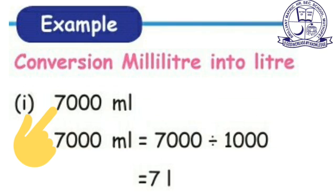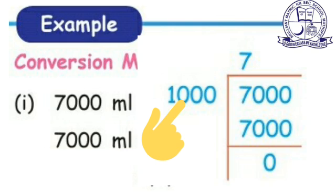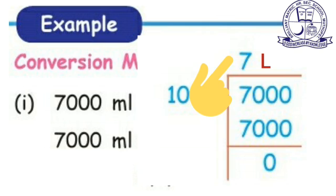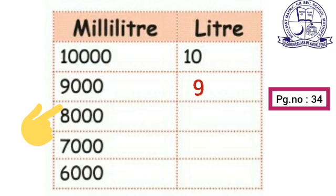First example: 7000 ml. We know that 1 liter equals 1000 milliliter, so divide by 1000. 7000 divided by 1000 equals 7. So 7000 ml equals 7 liters. Similarly: 10,000 ml equals 10 liter, 9000 ml equals 9 liter, 8000 ml equals 8 liter, 7000 ml equals 7 liter, 6000 ml equals 6 liter.